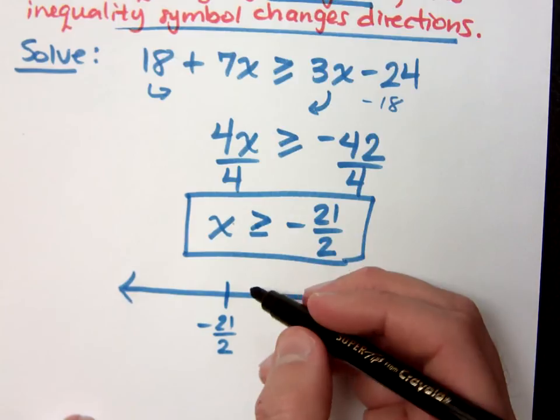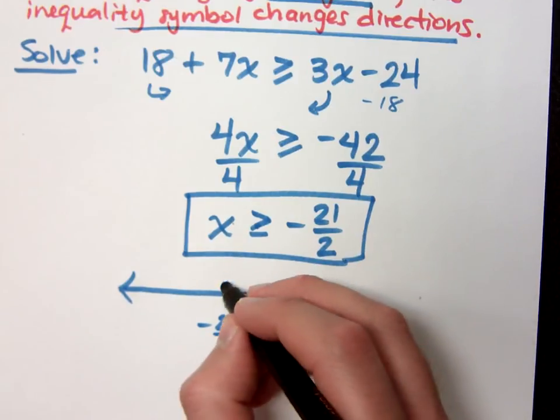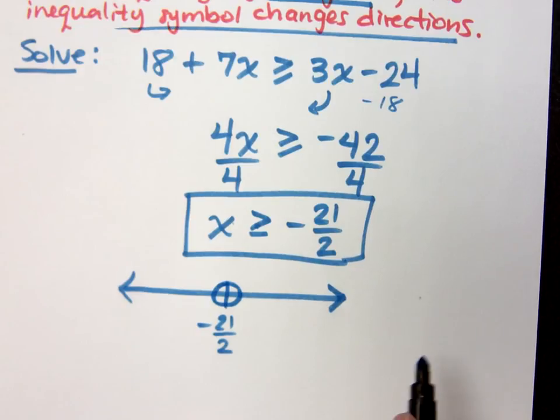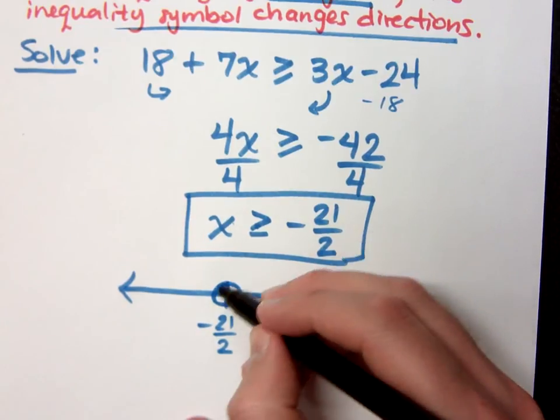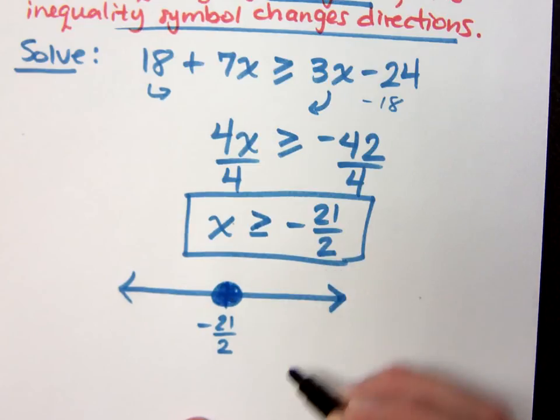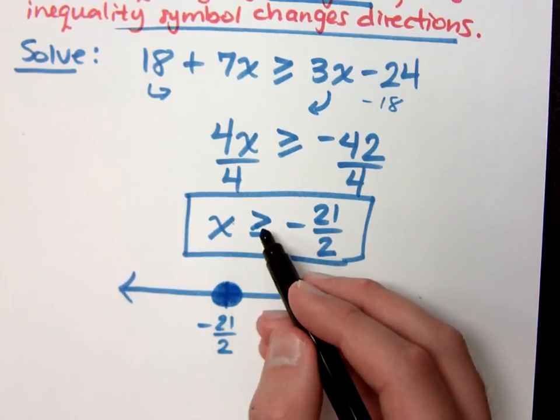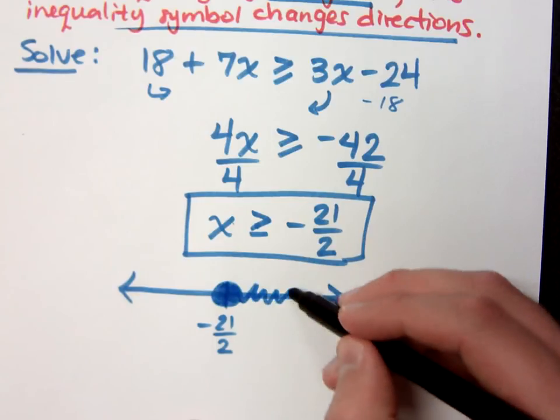Now, if we graph this, I like to put circles here. Since we are including negative 21 over 2, this guy will be included so it gets filled in. And x, which represents my solutions, x is greater than, so that means I'm shading, I'm graphing out to the right.